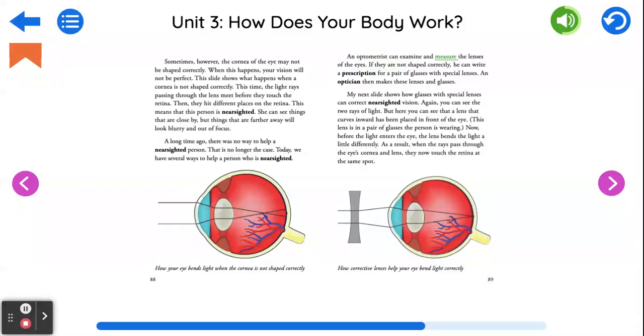An optometrist can examine and measure the lenses of the eyes. If they are not shaped correctly, he can write a prescription for a pair of glasses with special lenses. An optician then makes these lenses and glasses. My next slide shows how glasses with special lenses can correct nearsighted vision.